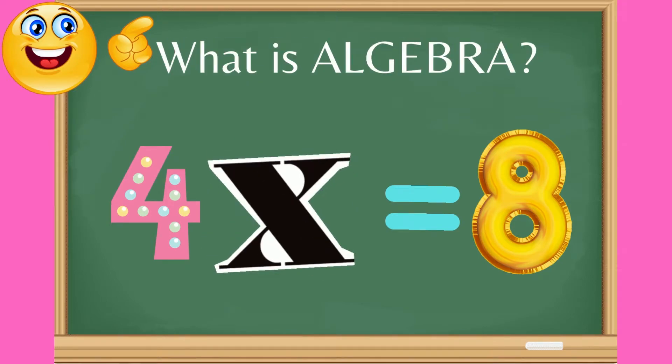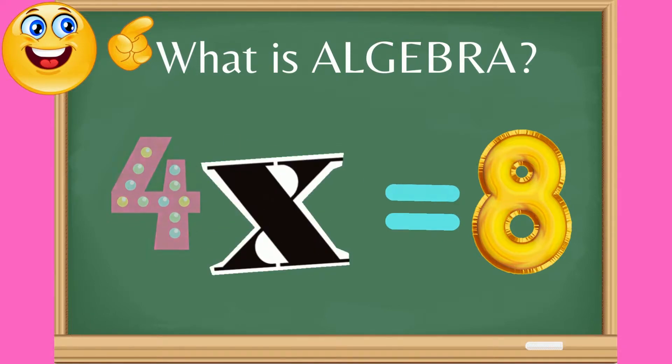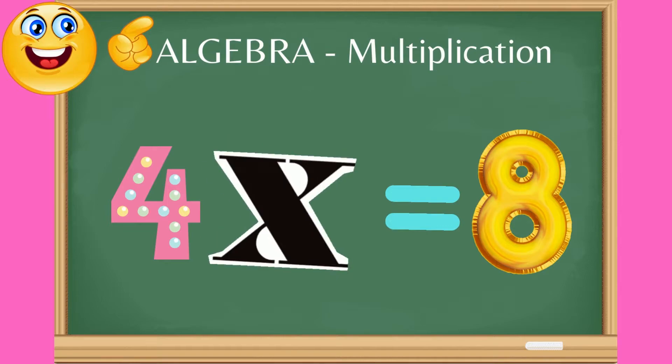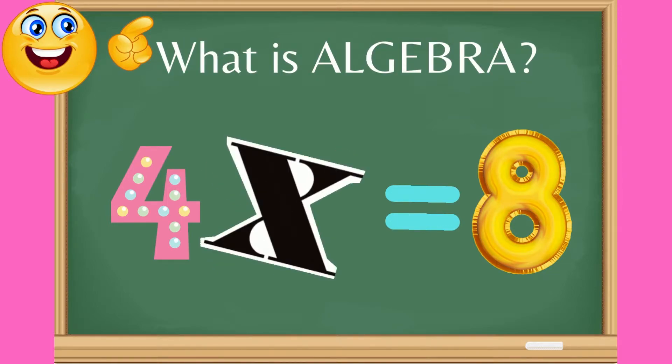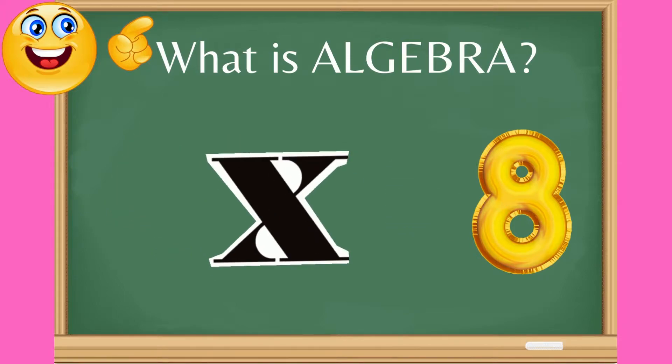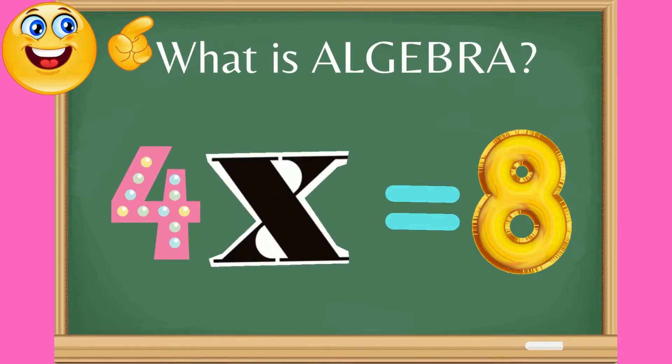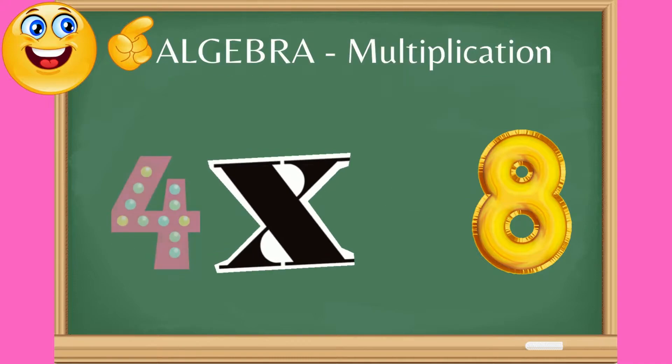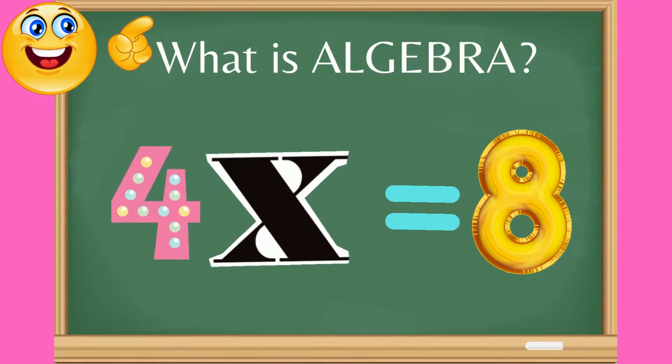Kagaya nga ng sinasabi natin dun sa nakaraan, dun sa part 1 ng introduction natin, laging natin tatandaan na to keep the balance, what we do to one side of the equals, we should also do to the other side. That's the main rule we need to remember. Kung ano, what is the opposite of multiplying? It's dividing.